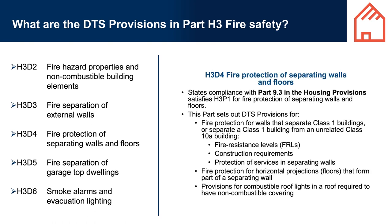Appurtenant structures: an appurtenance is defined as something accessory to another and more important thing. A structure that is appurtenant to a building is related to it in some way. In this context, the term often refers to a garage associated with a house. A house might need to be protected from the spread of fire from an appurtenant structure such as a garage associated with the house, or from a non-appurtenant structure such as a shed on a neighbouring property boundary.